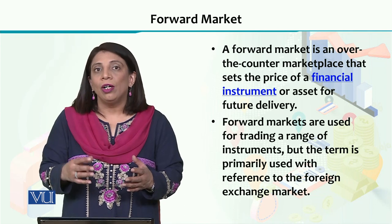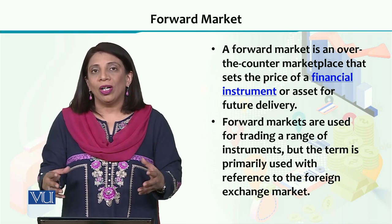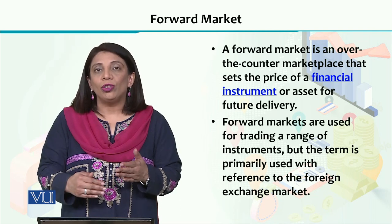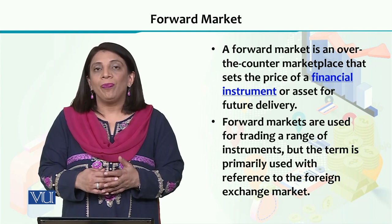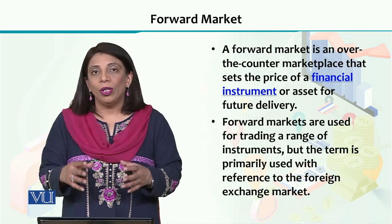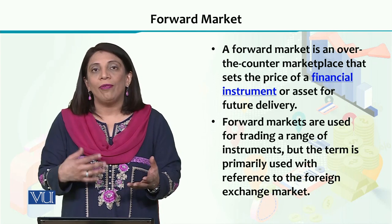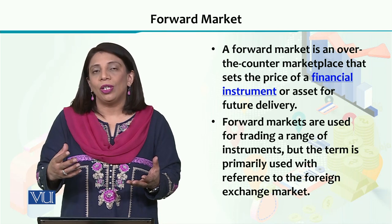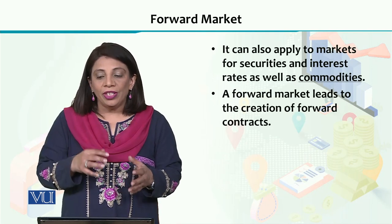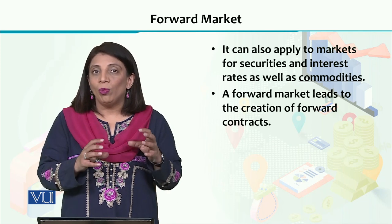Forward markets are very extensively used in the financial sector. We use a lot of commodities — like wheat, cotton, and rice — that we are going to deliver in the future under a contract that has already been signed. Forward markets may involve securities and interest rates, so it is not specifically linked up with one kind of asset.